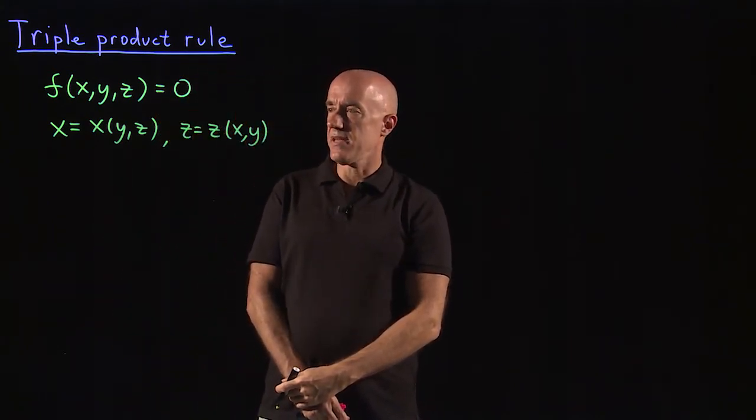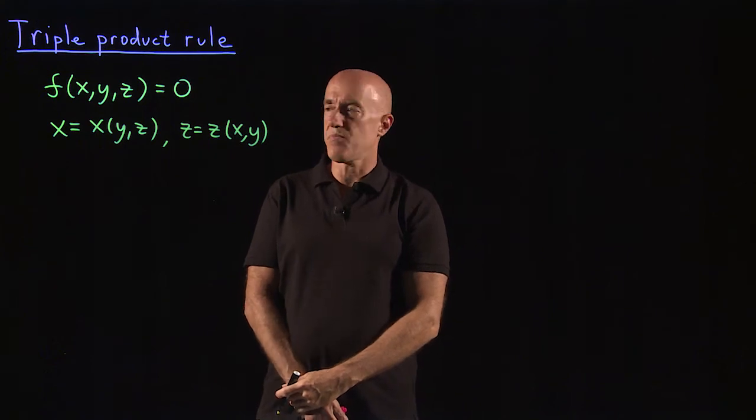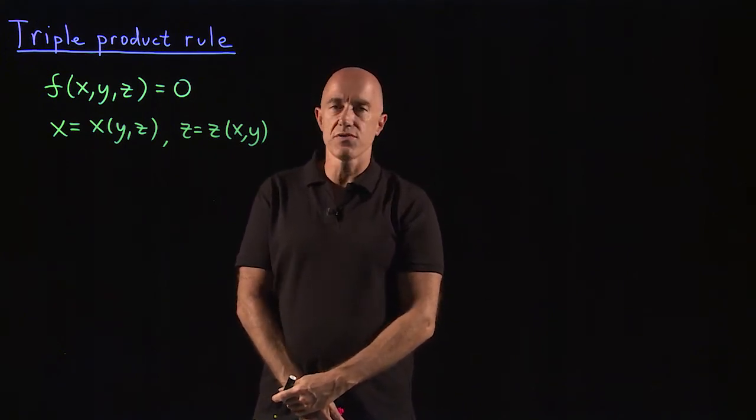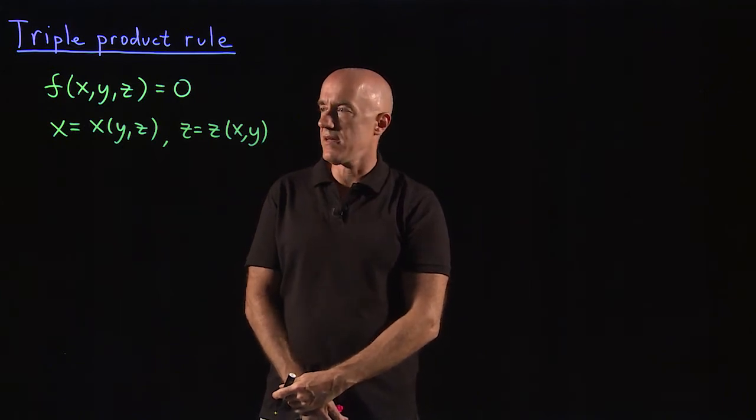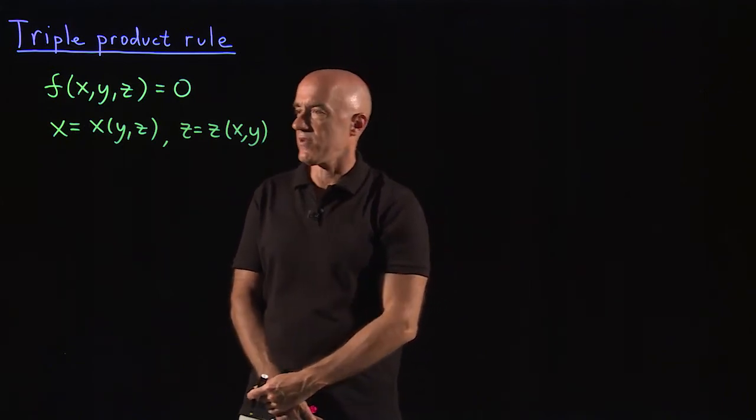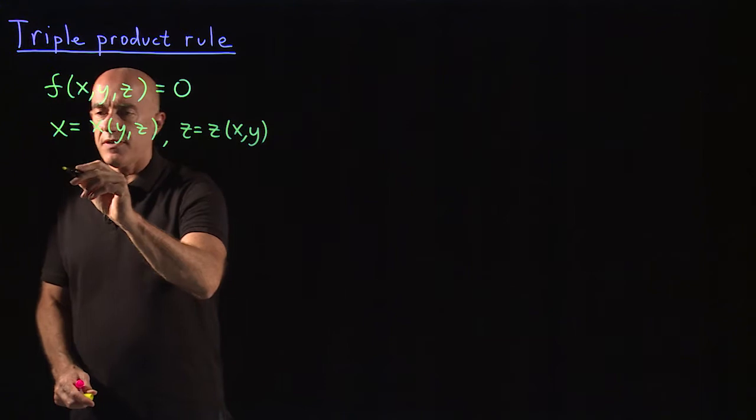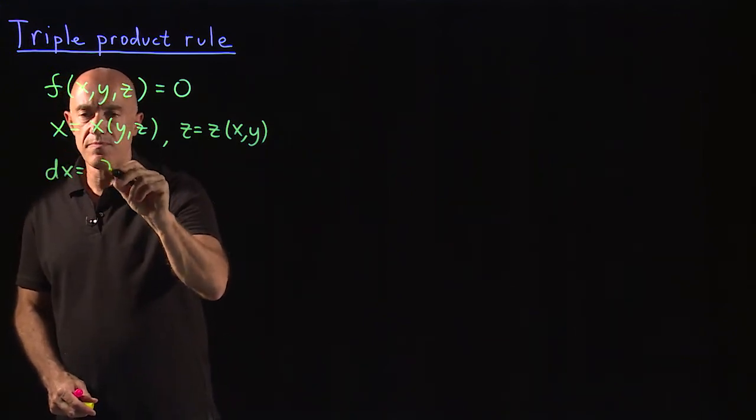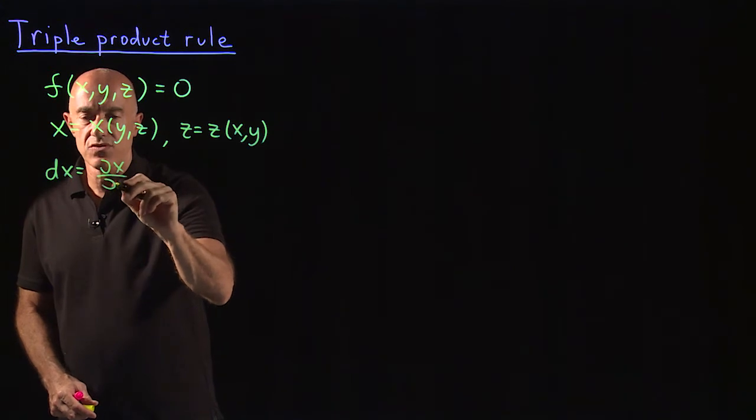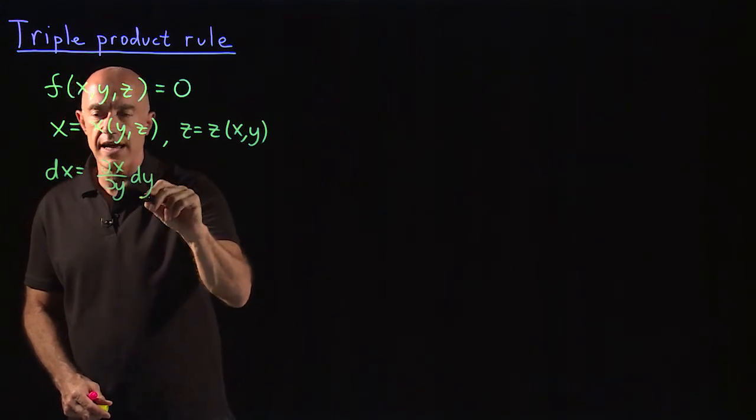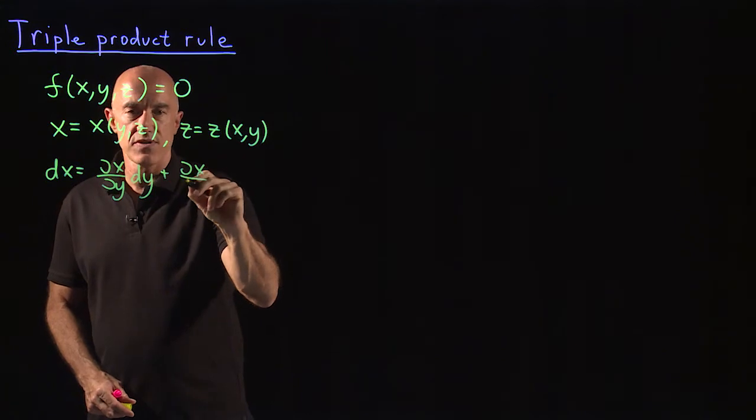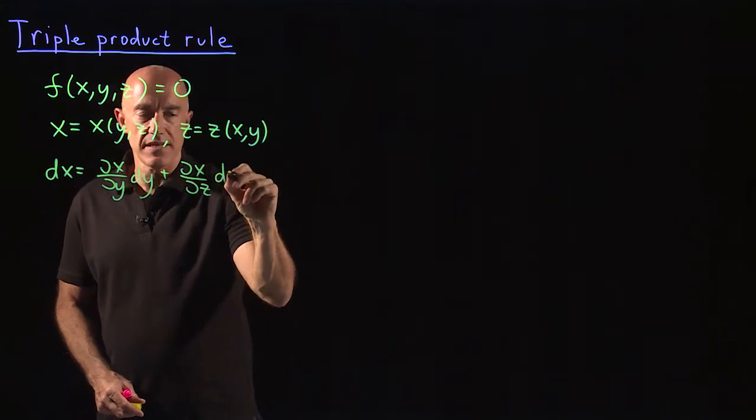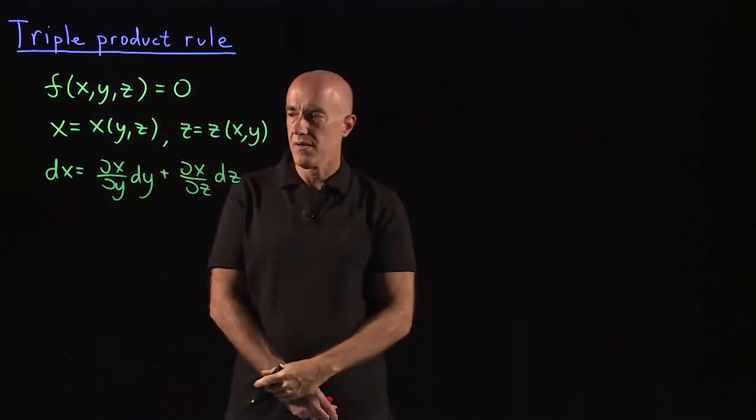Let's take the differential of these expressions using the partial derivatives, like when we did in the lecture on the chain rule. So we have the differential dx is equal to the partial of x with respect to y times dy, plus the partial of x with respect to z times dz.